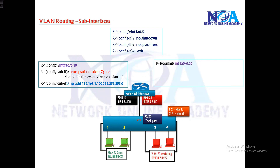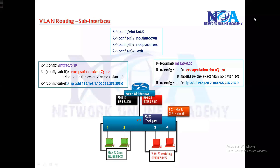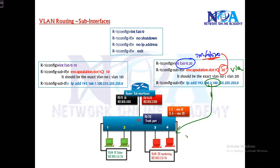Similarly, we need to create another sub-interface. In my example, F0/0.20, with the encapsulation command. This sub-interface is the gateway for VLAN 20, and the IP should be in the same subnet used in VLAN 20. These are the steps we need to configure on the router if we want it to do inter-VLAN routing — route traffic between multiple VLANs with the help of sub-interfaces on the router.